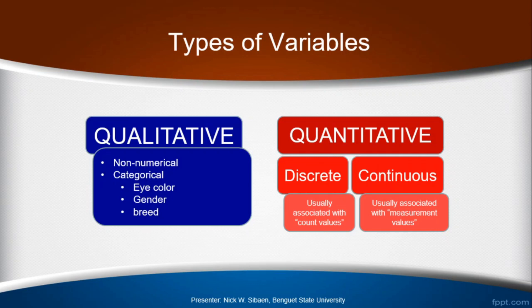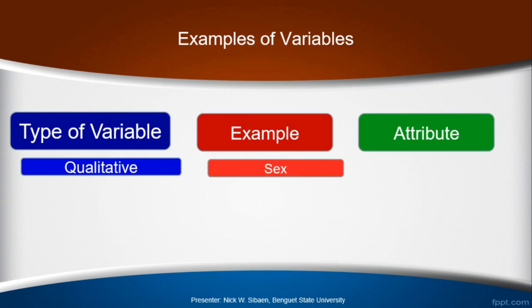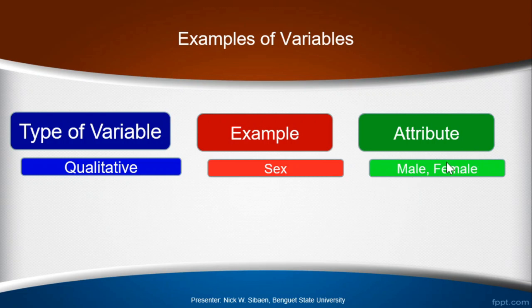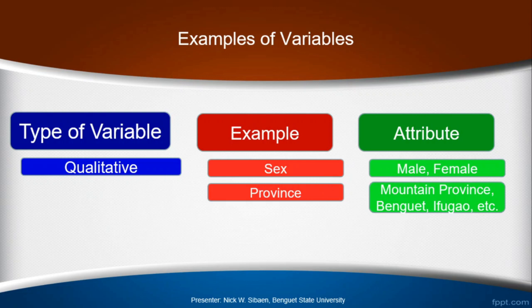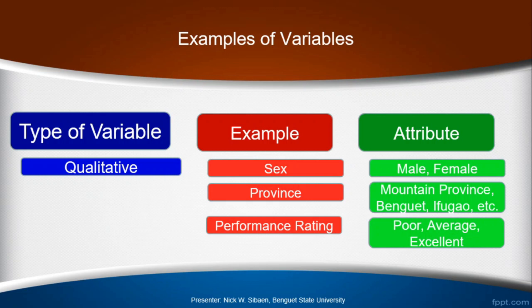Let us consider the following examples. For qualitative variables, the first example is sex, with attributes male and female. An attribute refers to the possible values for that particular variable. Another variable is the province you come from — possible values are Mountain Province, Benguet, Ifugao, or whatever province you come from. Performance rating as either poor, average, or excellent — these are all qualitative variables.